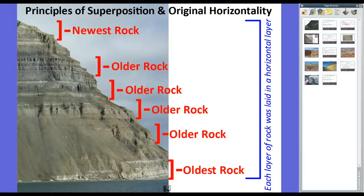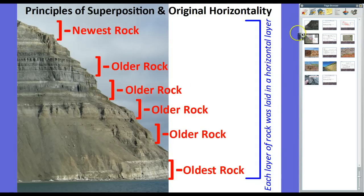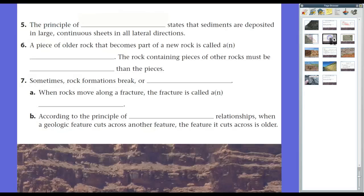Original horizontality states that if you notice, each of these layers was laid in a horizontal fashion, but weather and erosion give it this angular look. So that's superposition — the oldest rocks are at the bottom, the newest rocks are at the top of a formation — and according to original horizontality, it was all originally laid in horizontal layers.